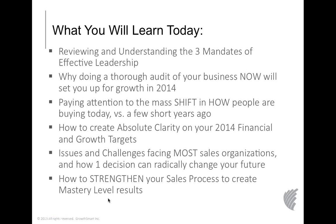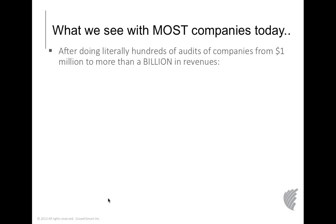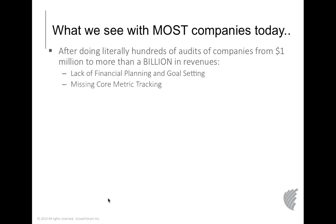I'm going to talk about how to strengthen your sales process to create mastery level results. After doing literally hundreds of audits in companies from as small as a million dollars a year up to well over a billion dollars in revenues, we see the same thing happening regardless of industry or country. Number one: lack of financial planning and, more importantly, goal setting — clarity on what it is you want to create in advance. Companies are also missing core metric tracking, and their marketing is either lacking, sporadic, or focused on products only.